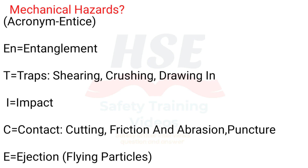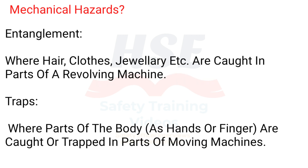Mechanical hazards - acronym ENTICE: E equals Entanglement. N equals... T equals Traps - shearing, crushing, drawing in. I equals Impact. C equals Contact - cutting, friction and abrasion, puncture. E equals Ejection - flying particles. Entanglement.